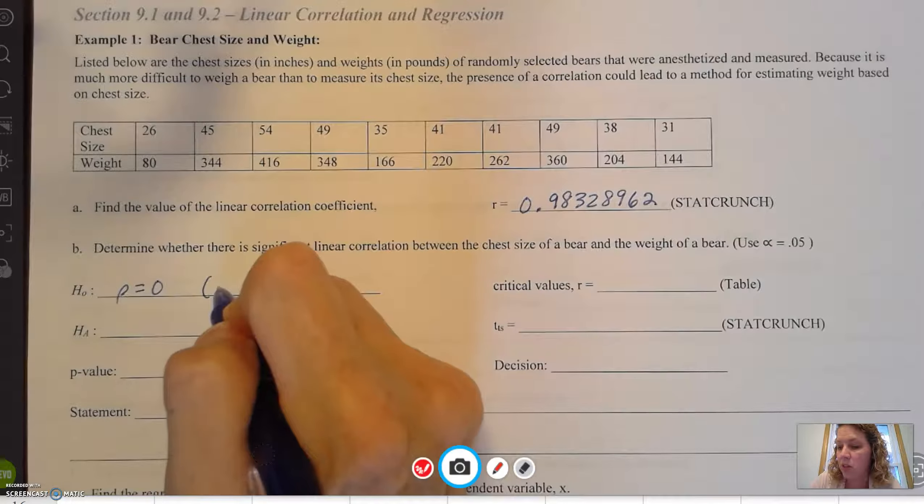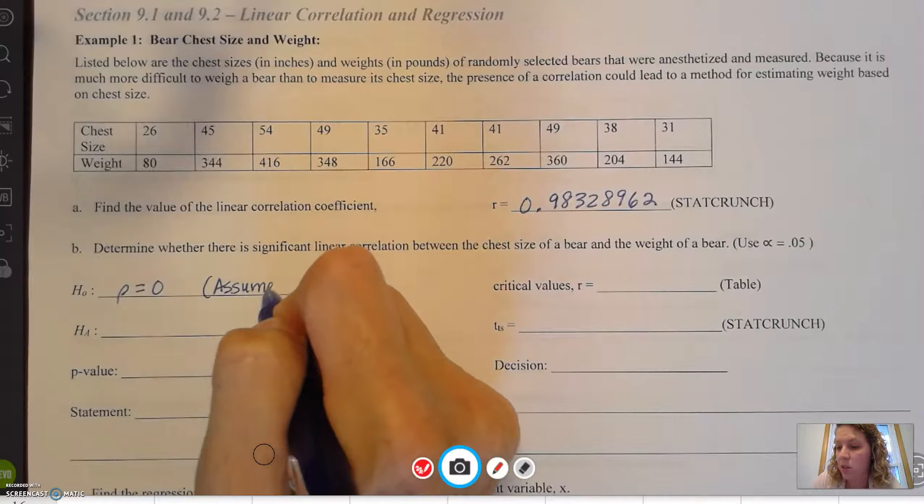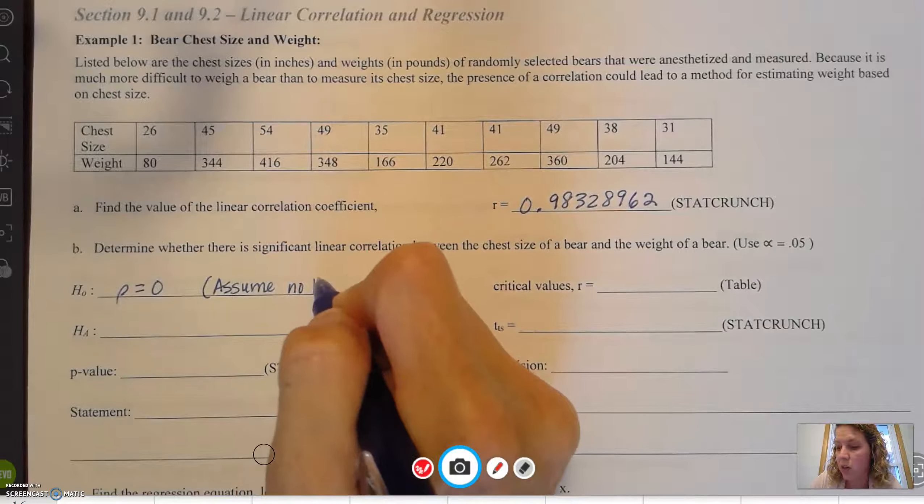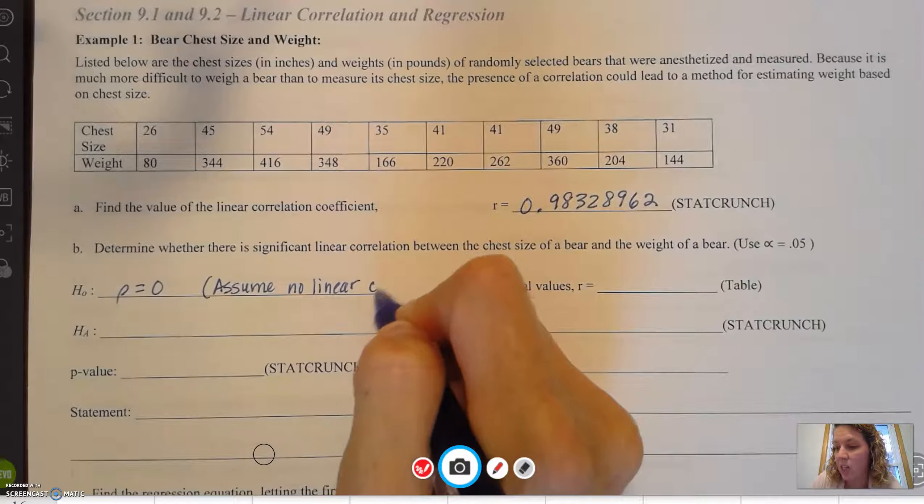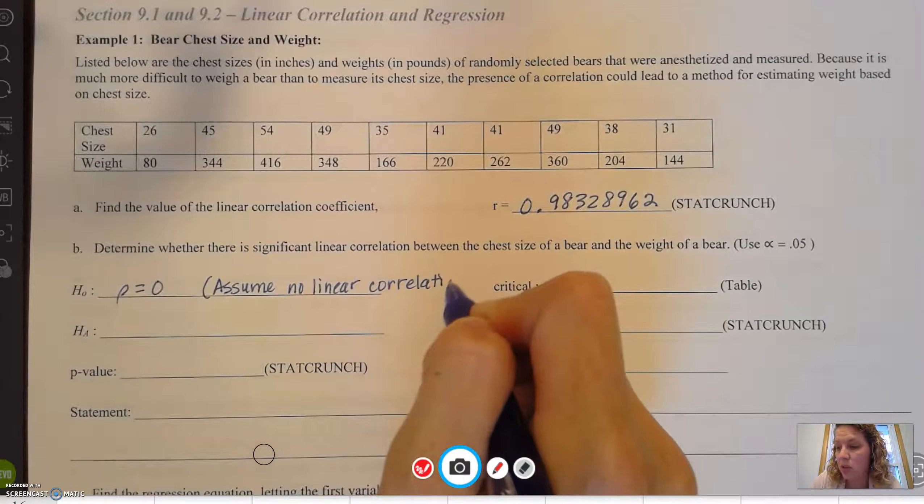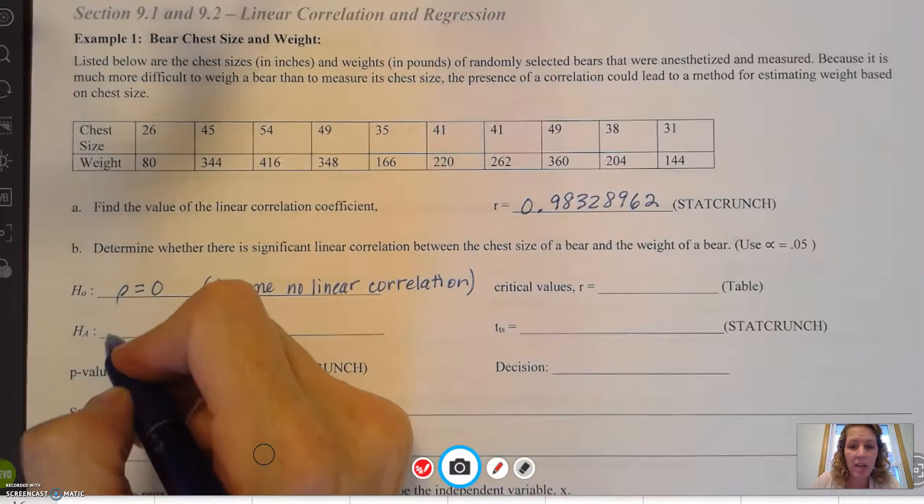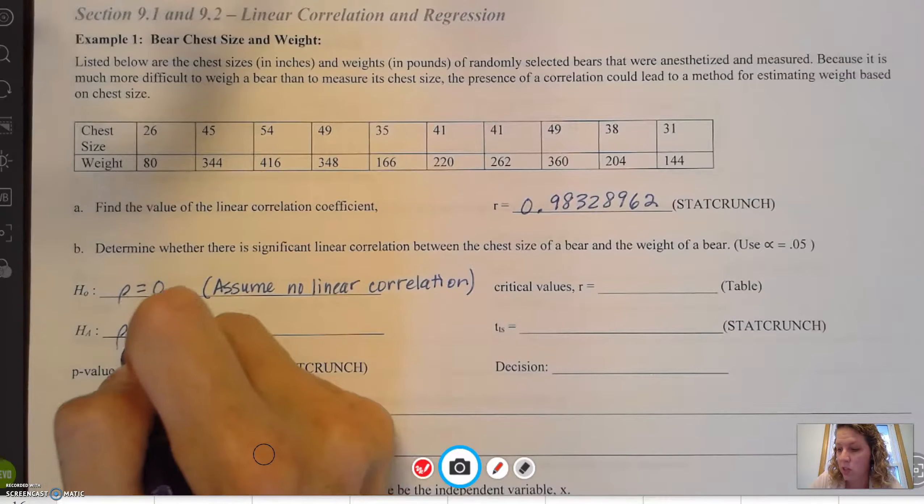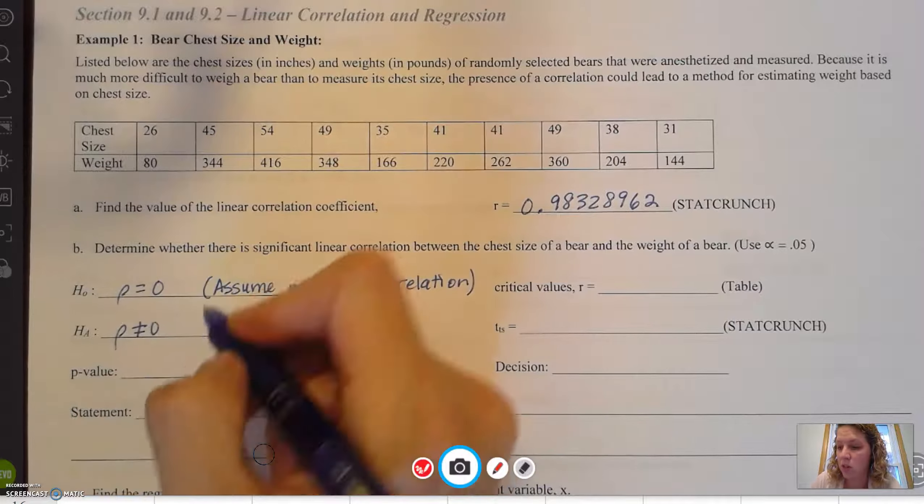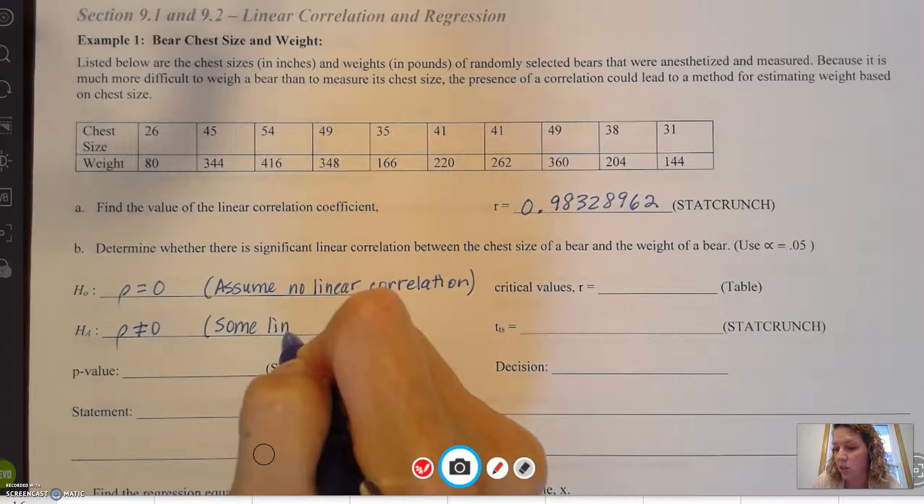I like the words in this problem as well as the symbols because I think it helps us in the understanding. Hₐ then would be ρ ≠ 0, which means some linear correlation exists.